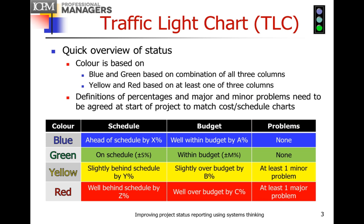Current traffic light charts use color based on project status: blue, green, yellow, and red. Blue tells you the project is ahead of schedule, within budget, and there are no problems. Green says it's on schedule, within budget, and there are no problems. Yellow says it's slightly behind schedule, slightly over budget, with at least one minor problem but planning to correct by the next reporting period. Red means well behind schedule, well over budget, or at least one major problem.